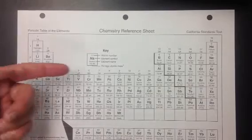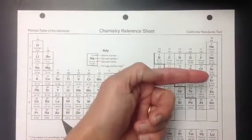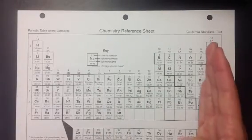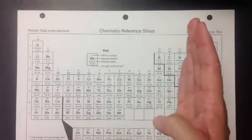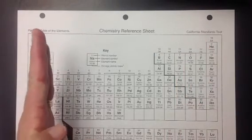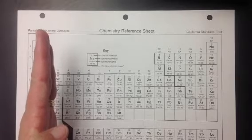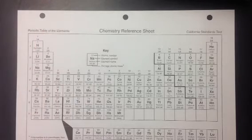So as you move across the periodic table, the ionization energy is going to increase because these atoms don't want to lose electrons. They're actually trying to gain electrons on this side of the periodic table, whereas over here they're actually trying to lose the electrons, so they will not put up much fight or have a lot of energy to remove those electrons.